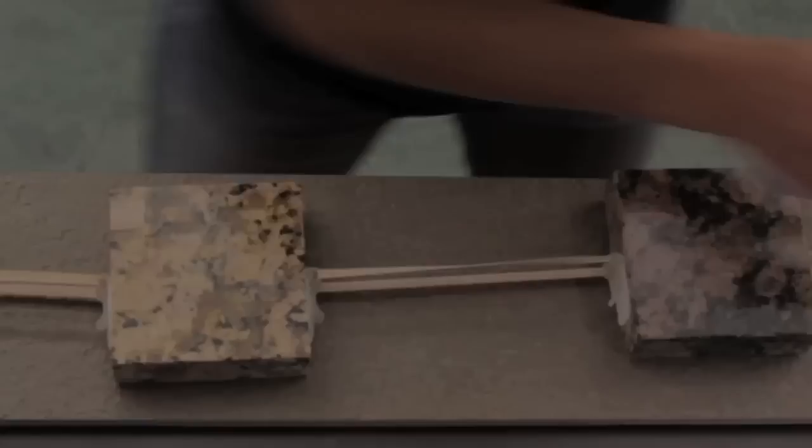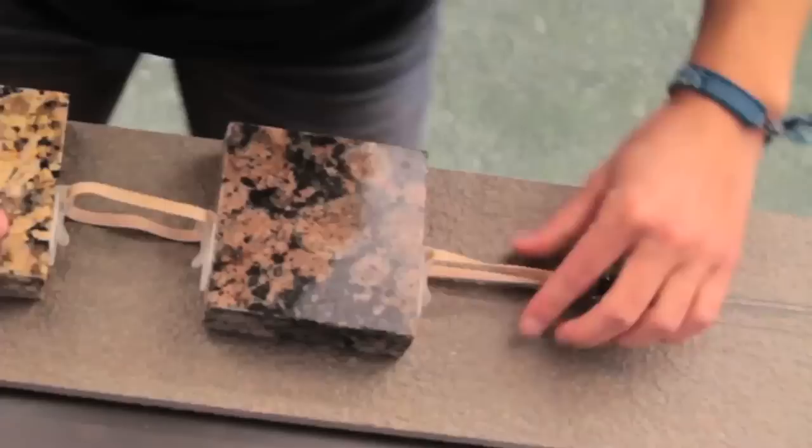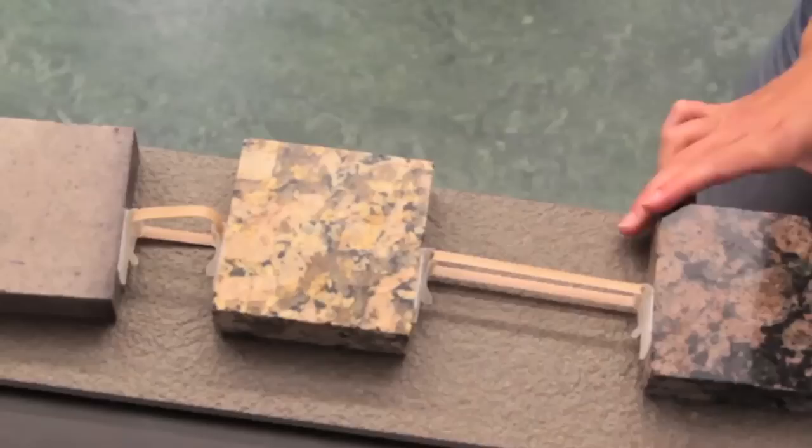Now that showed some really interesting Earth behavior. What we saw was tension building up on the first rubber band, which caused an earthquake with the first slider, which increased the tension on the second slider.